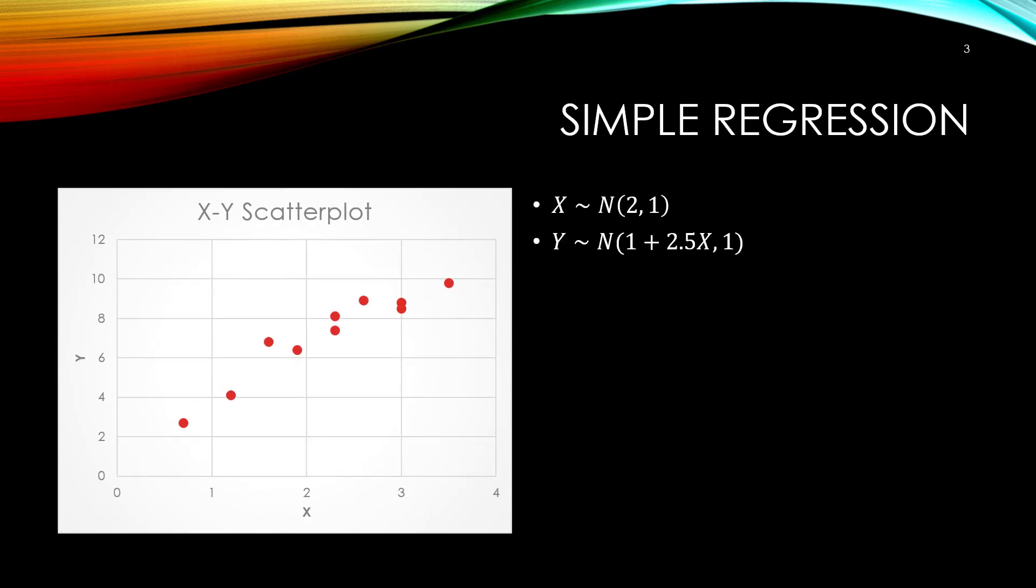Simple regression is the attempt to learn a model to predict an output variable y from an input variable x. x is also called the independent variable, and y is also called the dependent variable. When you have multiple input variables, people call the regression problem multiple regression as opposed to simple regression. Here is a scatter plot of x and y. x is sampled from a normal distribution with a mean of 2 and standard deviation of 1. y holds a functional relationship with x, meaning y is sampled from a normal distribution whose mean is based on x. The mean of y is 1 plus 2.5x with a standard deviation of 1.